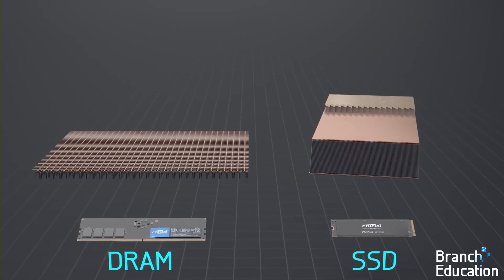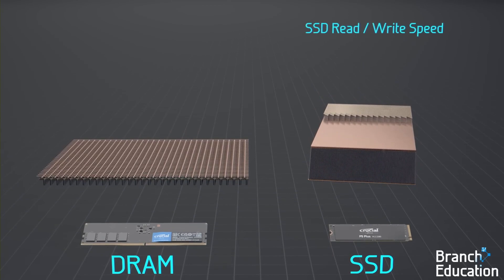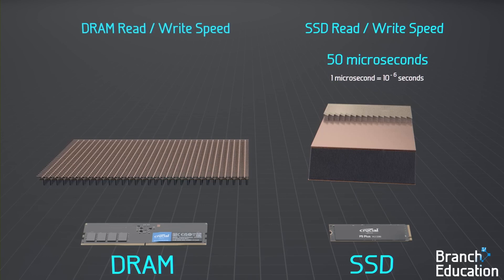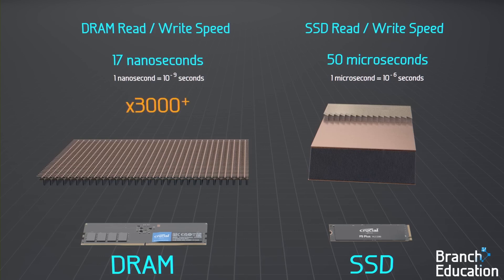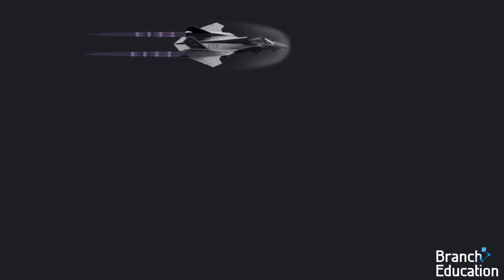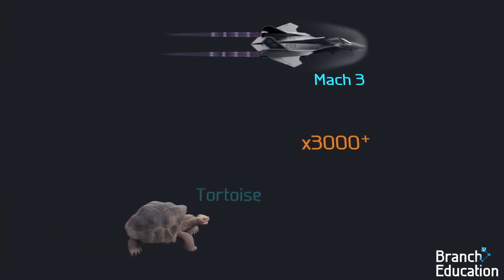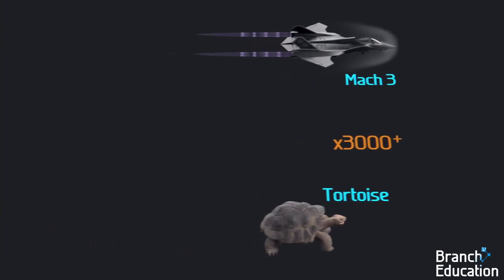Accessing any section of cells in the massive SSD array and reading or writing data takes about 50 microseconds, whereas reading or writing from any DRAM capacitor memory cell takes about 17 nanoseconds, which is 3,000 times faster. For comparison, a supersonic jet going at Mach 3 is around 3,000 times faster than a moving tortoise.